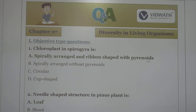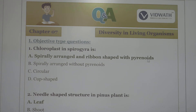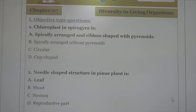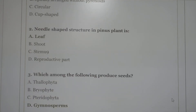Now for objective type questions. First: the chloroplasts in Spirogyra are spirally arranged and ribbon-shaped. Second: the needle-shaped structure in Pinus is a leaf.